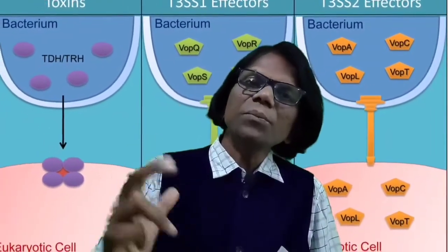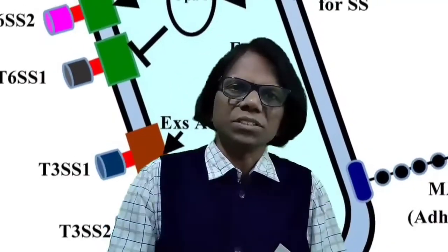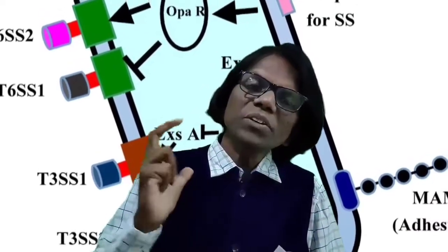Isolation of Vibrio parahaemolyticus or any Vibrio species is facilitated by using media with alkaline pH. Alkaline peptone water is commonly used for isolation and identification. In this video we are discussing enumeration, isolation, and identification of Vibrio parahaemolyticus by using USFDA BAM method.